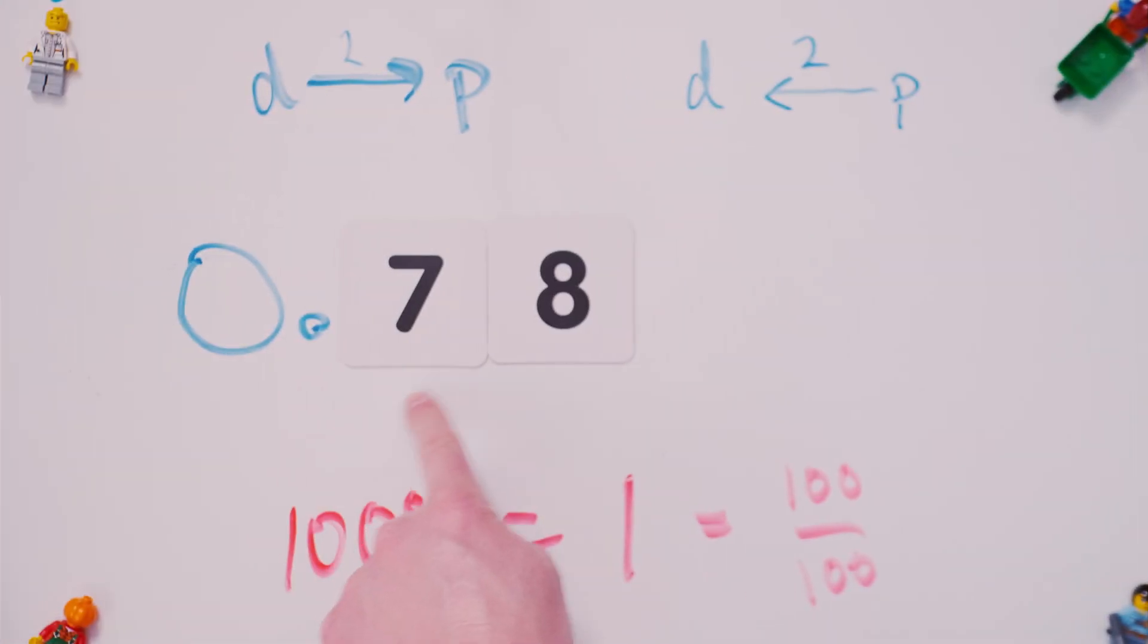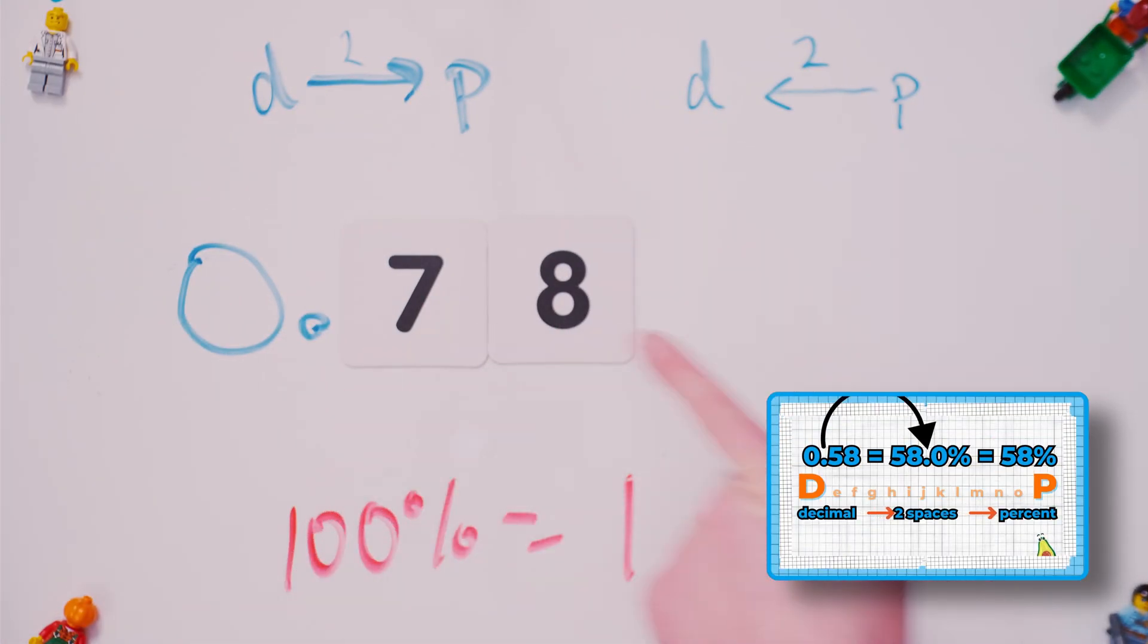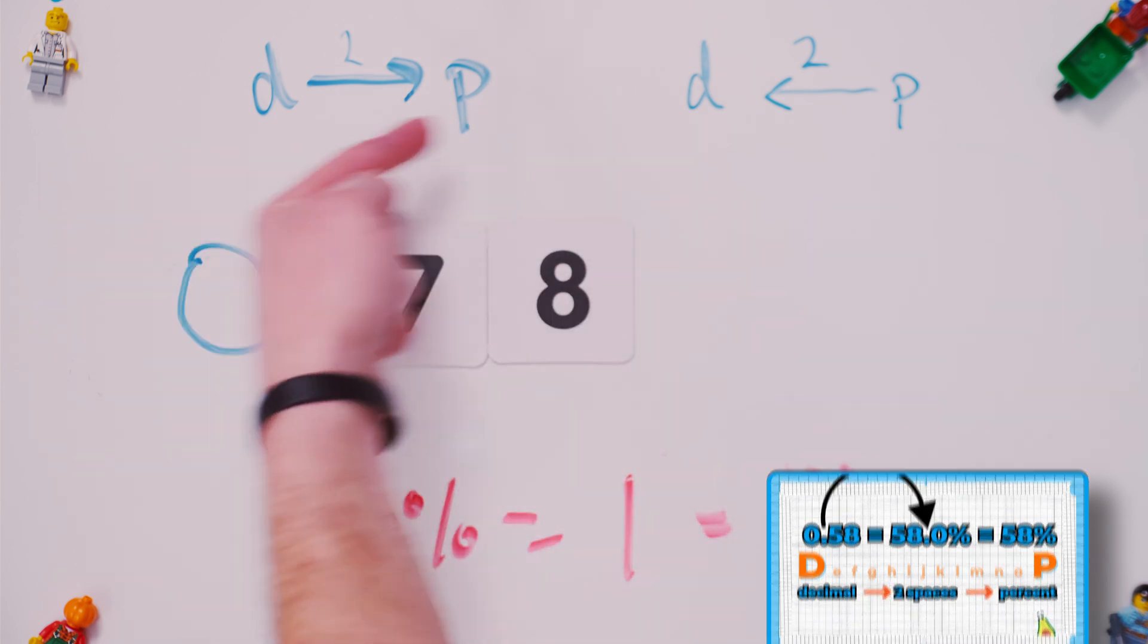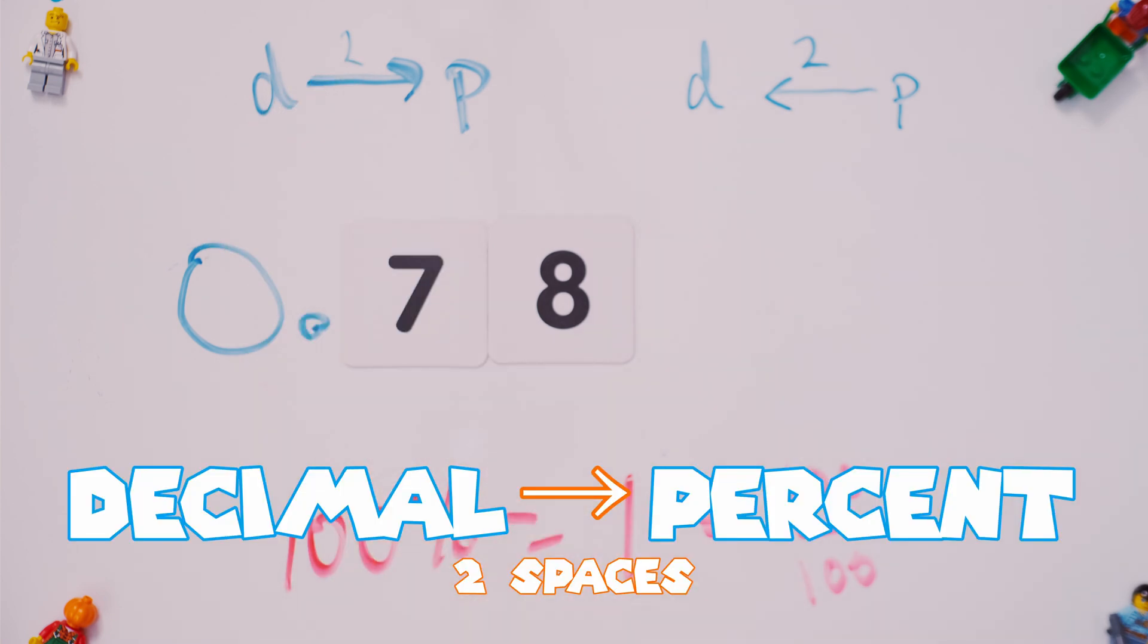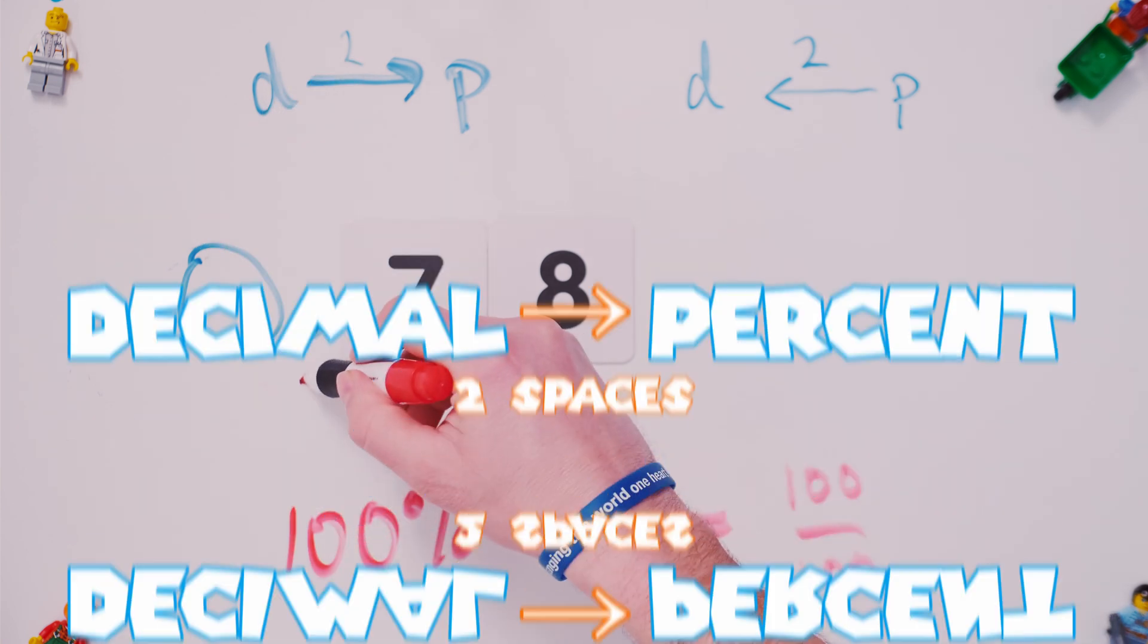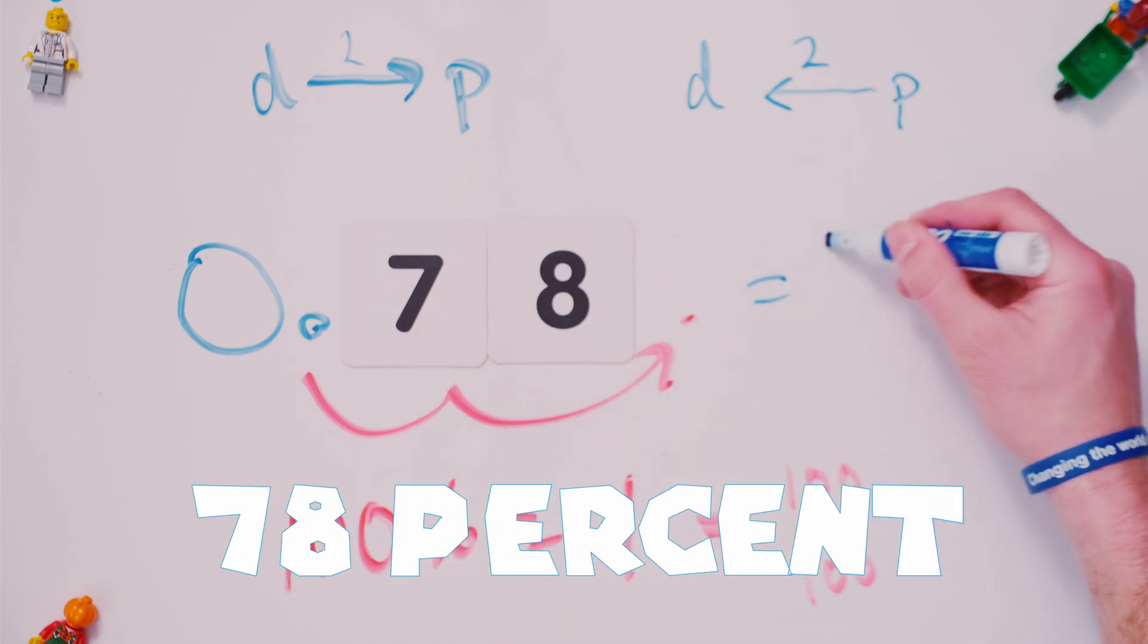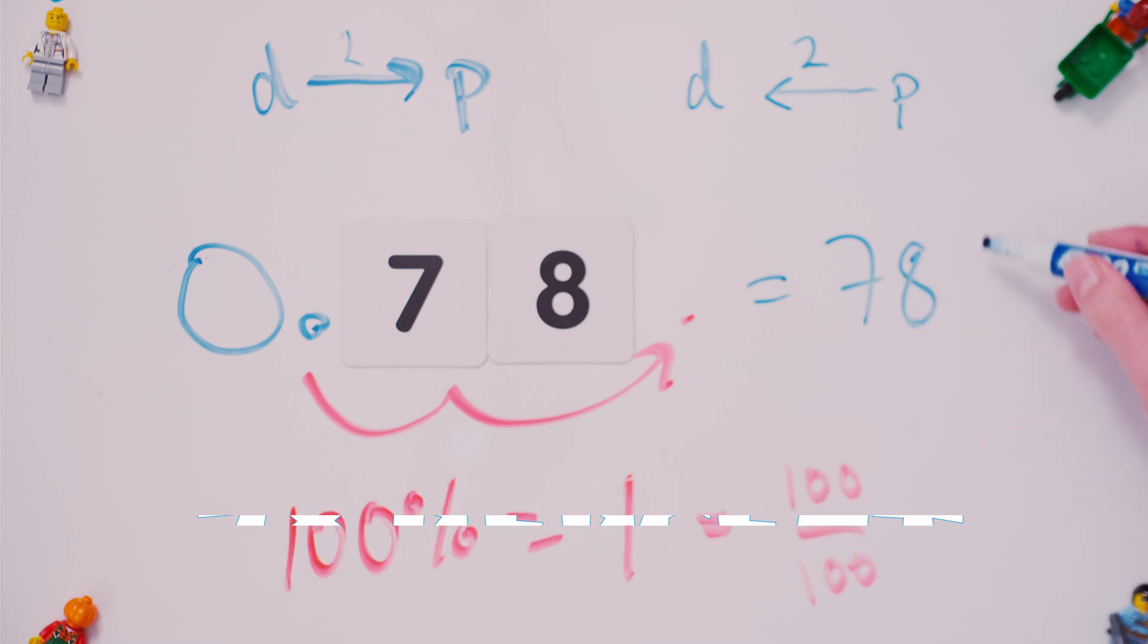Therefore, 0.78. Now, if we have a decimal and we want to convert it to a percent, think again about the nice nifty way to convert from a decimal to a percent. P comes after D. So now this is 78 instead of 0.78. And you got to add your percent sign. Don't forget that.